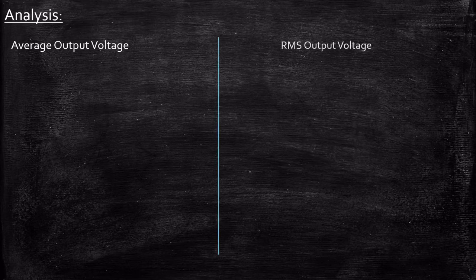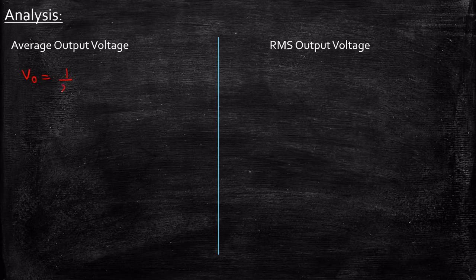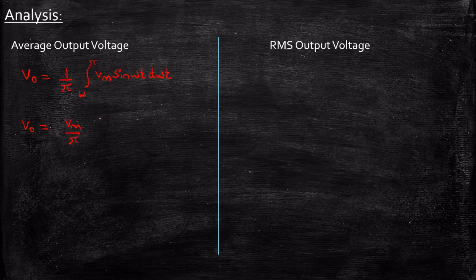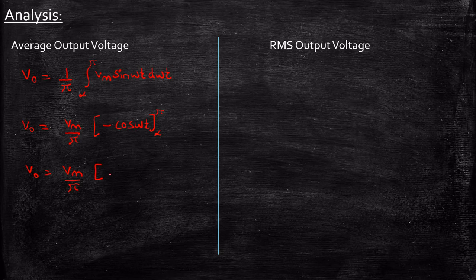Now let's look into the analysis part, where we derive the expression for average and RMS output voltage. For average output voltage, the fundamental definition gives: Vout_avg = (1/π) × ∫[alpha to π] Vm sin(ωt) d(ωt). Substituting and simplifying — integration of sin gives minus cosine — evaluated from alpha to pi, we get Vout_avg = (Vm/π)(1 + cos α).